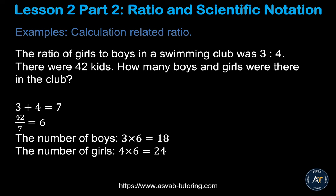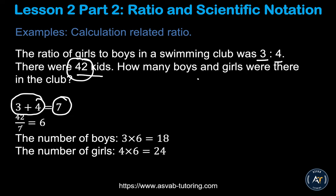Now let's apply this ratio knowledge to a real problem. The ratio of girls to boys in a swimming club was 3 ratio 4, and there were 42 kids total. How many boys and girls were there? First, add the ratio values together: 3 plus 4 equals 7. Then divide the total number by that sum: 42 divided by 7 equals 6. This 6 is the multiplication factor.